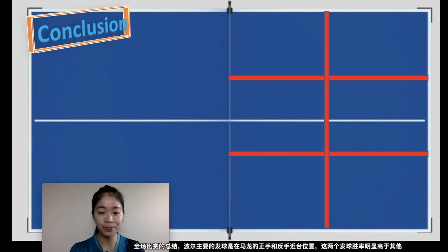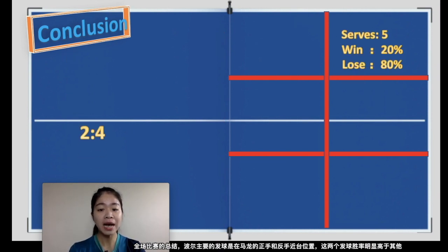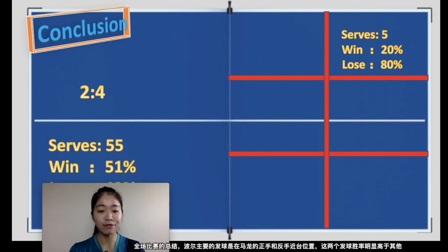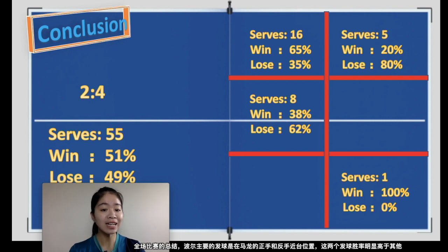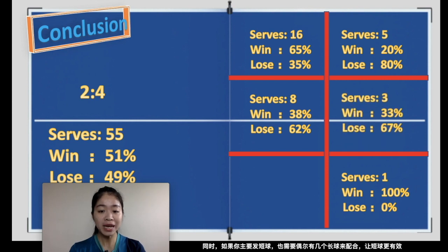For the whole match conclusion: Timo's majority serve spots were the backhand and forehand short areas, and looking at the winning percentage, short serves scored more than other areas. Moreover, if you have a short serve it's better to mix in a few long serves, because that will make your short serve more effective.